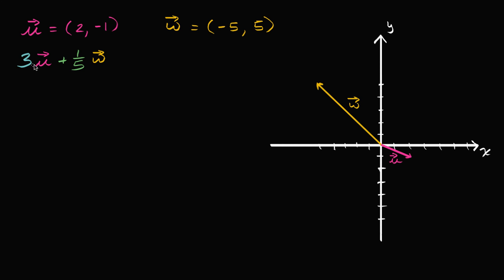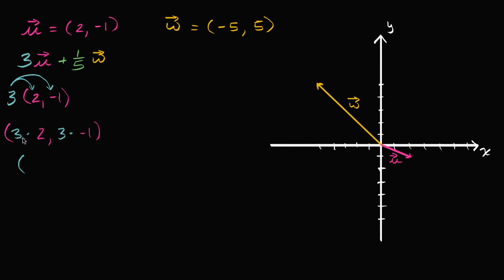When we scale vector u by three, three times vector u — we know vector u is the vector two comma negative one — that's going to be three times two for the new x component and three times negative one for the new y component. That results in the vector with x component six and y component negative three. Let's plot that — this corresponds to that part of the expression.